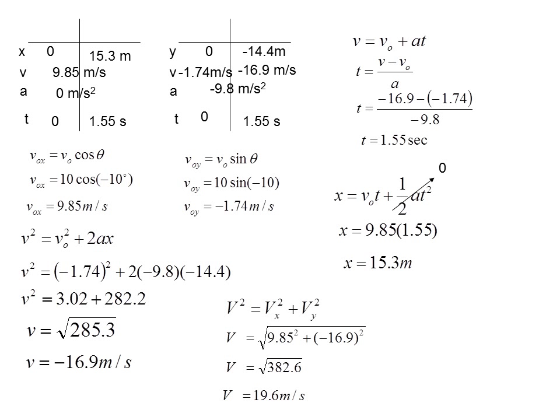And since it's a velocity, we also need a direction. So I'm going to use the inverse tangent of the y velocity divided by the x velocity. I plug my numbers in, and that gives me an angle of negative 59.8 degrees. All right, so my final velocity is 19.6 meters per second at negative 59.8 degrees.